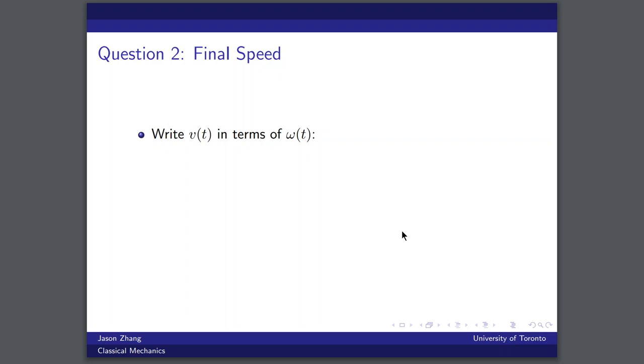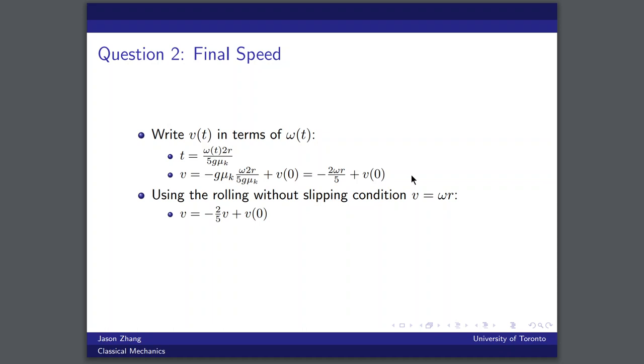So now we should write V of T in terms of omega T. And we want to do this because we want to get rid of the time dependence. So we can take our expression for omega T and isolate for T, and then we can substitute this into our equation for V. And we find that V is equal to minus 2 over 5 omega R plus V of zero. But we note that because we want to find the point at which the ball is rolling without slipping, we should note that we can use the condition V is equal to omega R and find that V is equal to minus 2 over 5 V plus V of zero. Isolating, we should find that V is equal to 5 over 7 of the initial speed, which is equal to 4.64 meters per second.